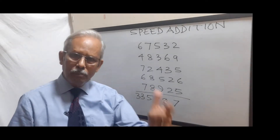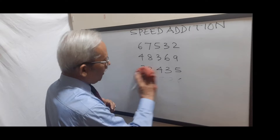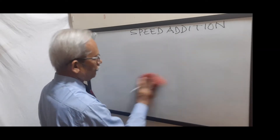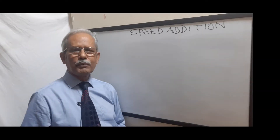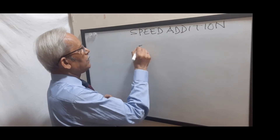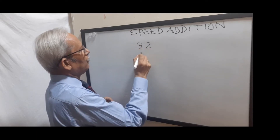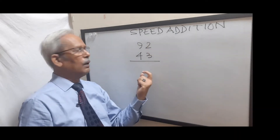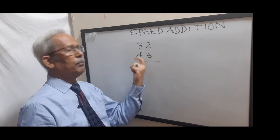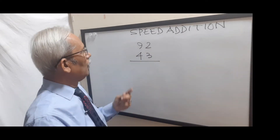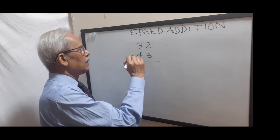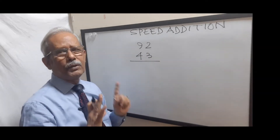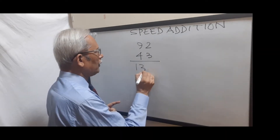So I will give an example of Vedic addition first. Say for example you have to add 92 with 43. Here we will not do the conventional way — 3 plus 2 is 5, then 4 plus 9. Instead, we take the tens place: 9 as 90, and 4 as 40. 90 plus 40 is 130, and 2 plus 3 is 5 — so 135. You can do it mentally.